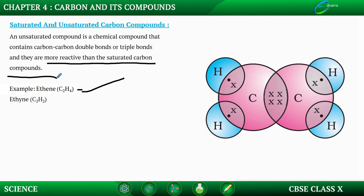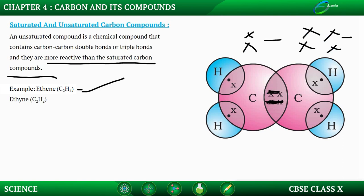As you can see in the diagram, the carbon atoms are sharing two electrons each, which is why it has a double bond. If carbon shares one electron each, it is a single bond. If it shares two electrons each, it is a double bond. And if it shares three electrons each, it is a triple bond.